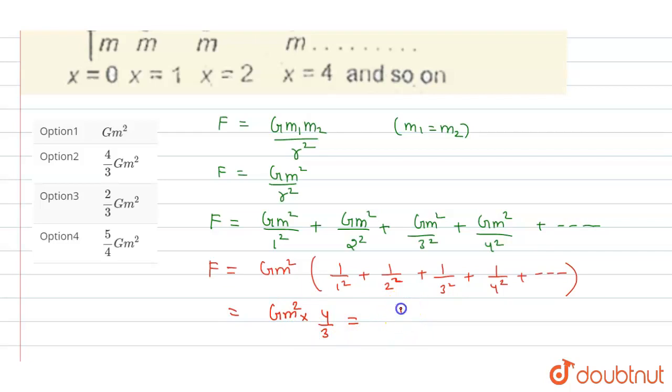So we will get F equals 4 by 3 G m squared. So this is the net gravitational force acting on point mass m which is placed at origin. So from the given options, the second option is the correct one. Thank you.